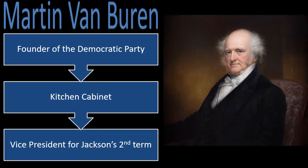Martin Van Buren was a Jacksonian Democrat and founder of the Democratic Party. He quickly rose up the ranks of government. He was elected governor of New York in 1828, and appointed secretary of state in 1829 by Jackson. Van Buren was a prominent member of Jackson's kitchen cabinet, his inner circle of allies. In 1832, he was nominated as Jackson's vice president, replacing John C. Calhoun, who was falling out of favor with Jackson as a result of the Peggy Eaton affair and the issue of nullification.